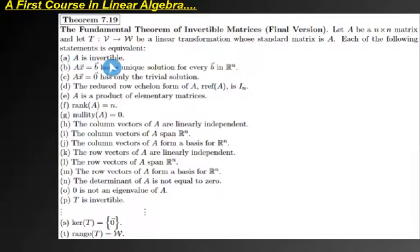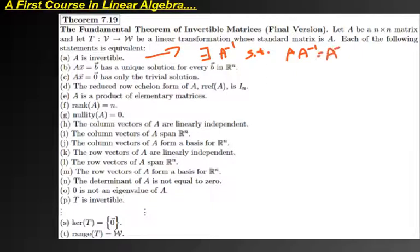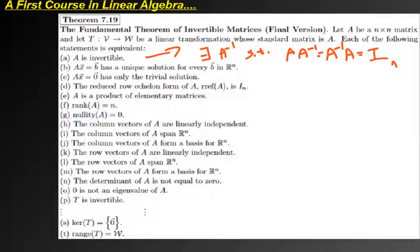The very first item in the theorem is that A is invertible, which means that A has an inverse — that there exists an A inverse such that A times A inverse equals the identity matrix. This fundamental theorem of invertible matrices is practically what you need to understand by the end of a linear algebra class, and it's all built upon this first concept.